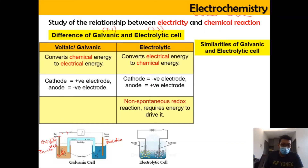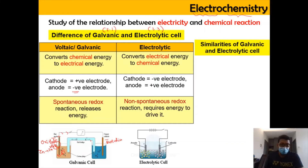The anode, because it becomes the source of electrons, will become the negative terminal. This is a spontaneous redox reaction because it releases energy in the form of electricity — from chemical to electrical. The energy can be detected by the change in the voltmeter reading. However, for electrolytic cell, it is a non-spontaneous redox reaction, meaning it requires energy to drive it.